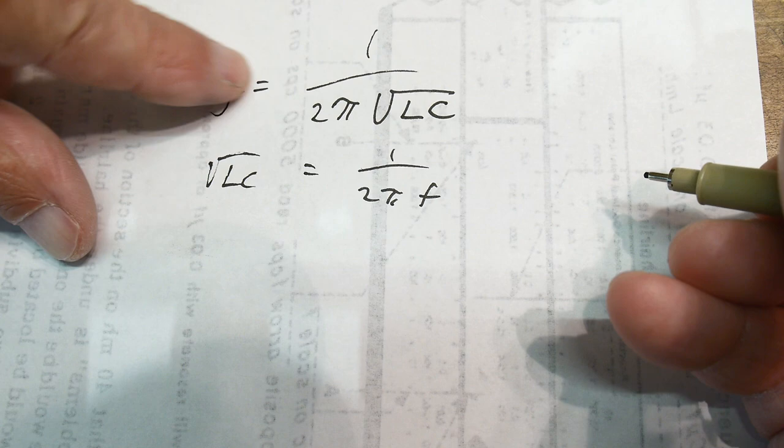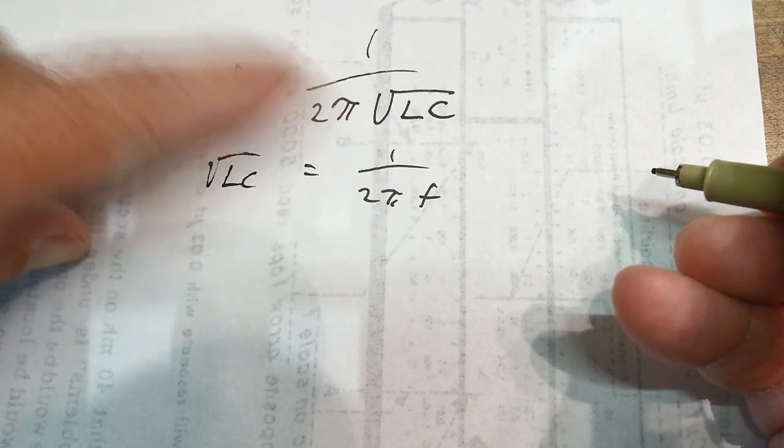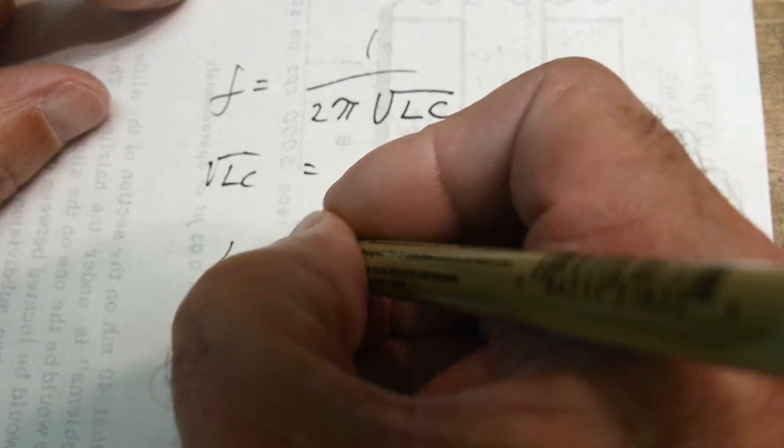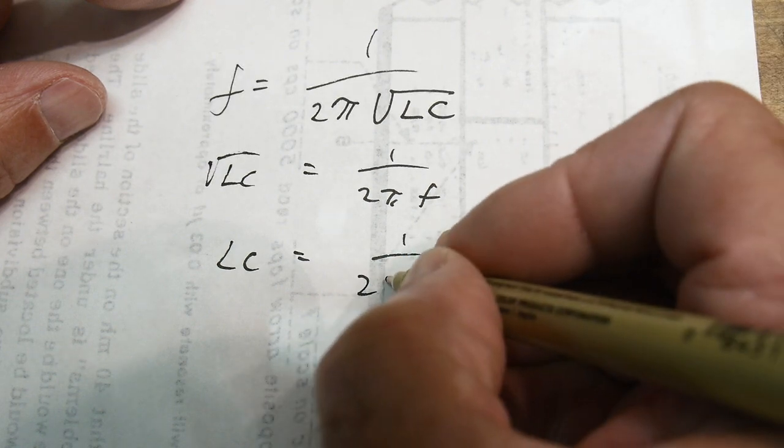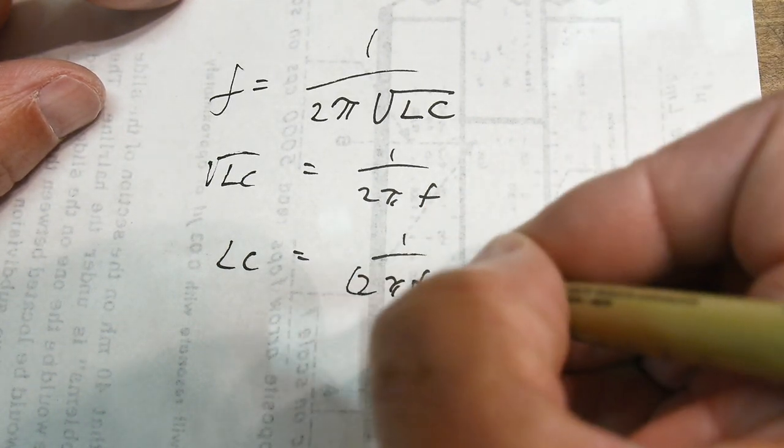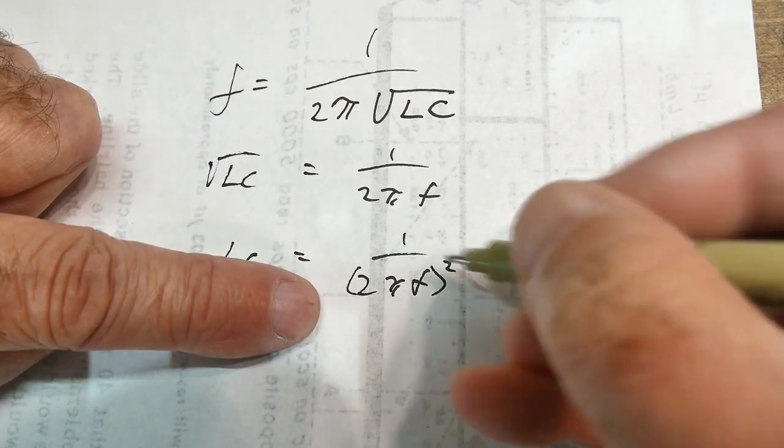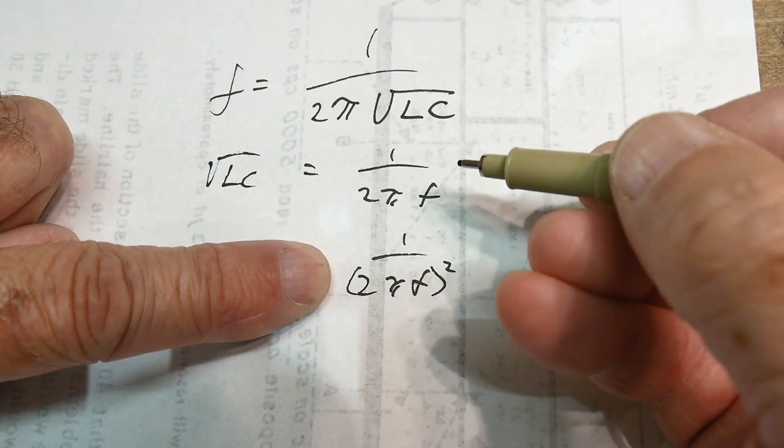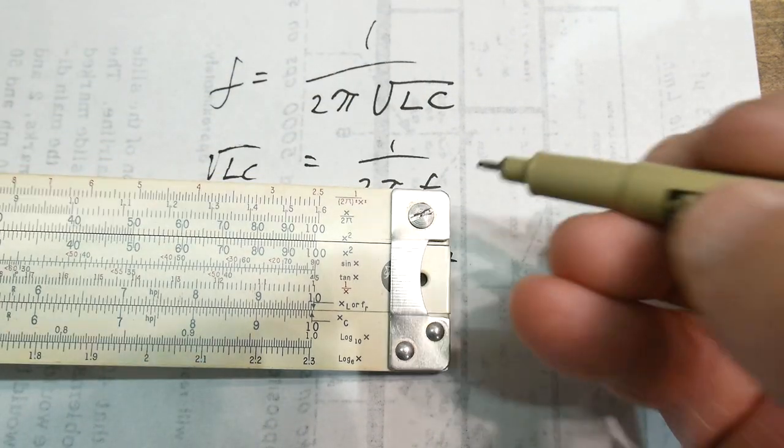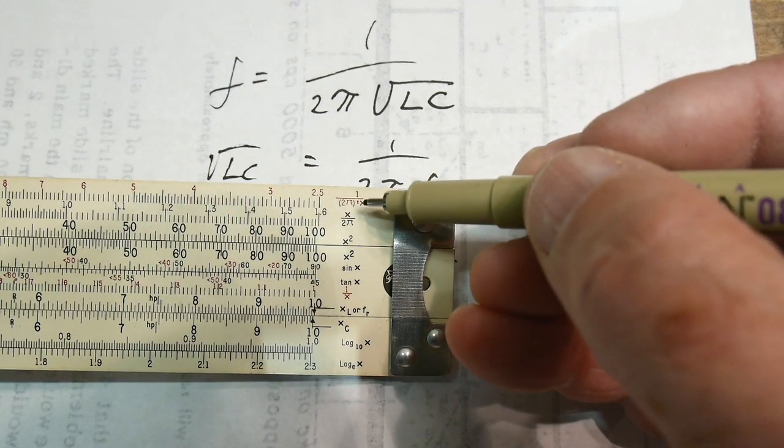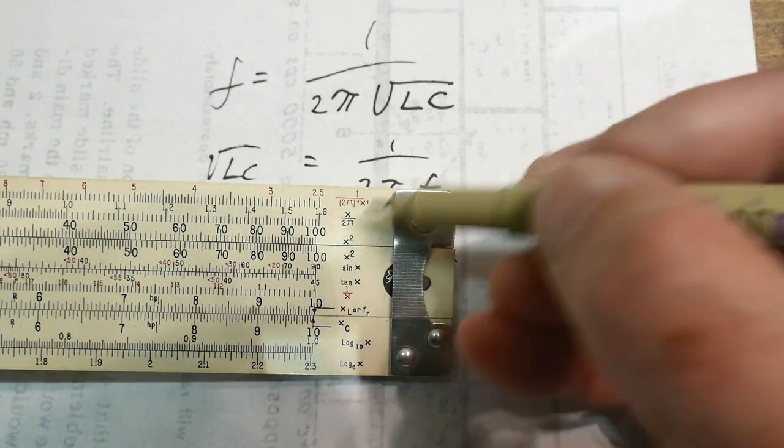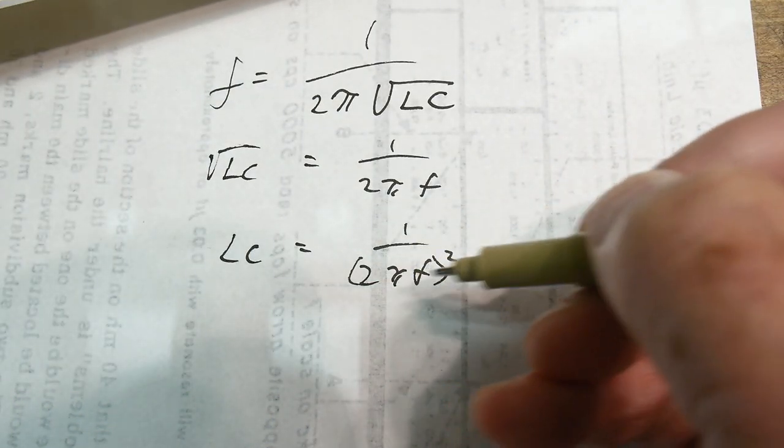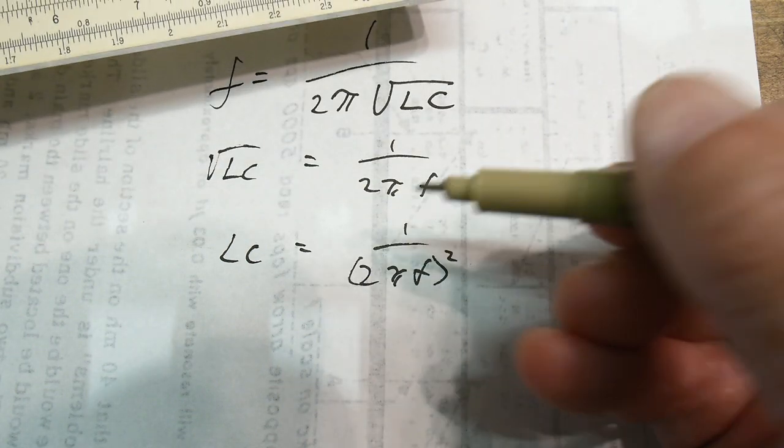So, LC equals one over two pi f squared. We're going to square all of that. Does that look familiar? That's one of the scales on our slide rule. We have a scale that is one over two pi x squared. So, two pi x all squared, which is what we have here, two pi f squared. Well, f is our x. And so, we can use that scale to solve this problem.